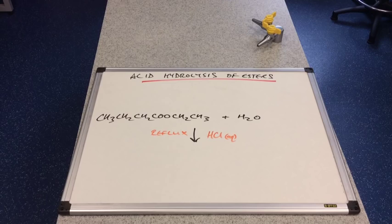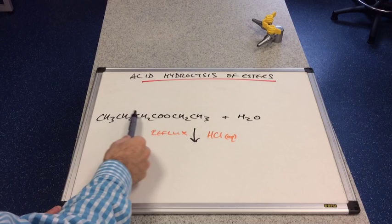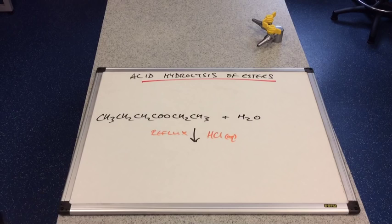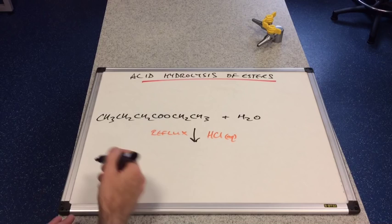So we'll do another one of these. So we'll hydrolyze ethyl butanoate. We'll hydrolyze that with aqueous hydrochloric acid. So the equation has the water in it and we're going to break it apart here, remember.